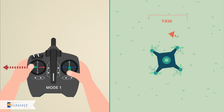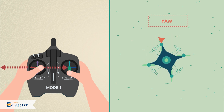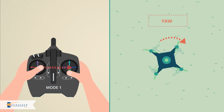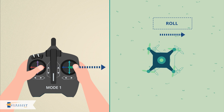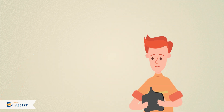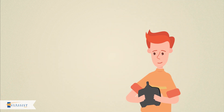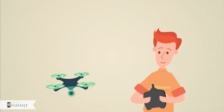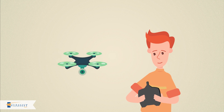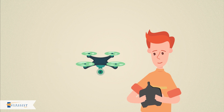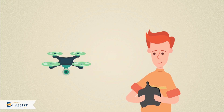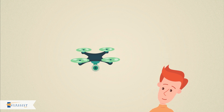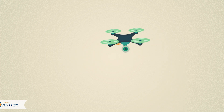Moving the left stick left and right, and moving the right stick left and right, rolls the aircraft left and right. In fact, most remotes can be programmed for an input to mean whatever action is desired. If you wanted left and right to mean up and down, we have the technology.